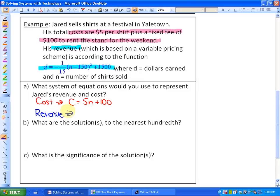As far as his revenue goes, his revenue is equal to d, so this would be d. His revenue equals d equals negative 1/15th (n minus 150) squared plus 1500.